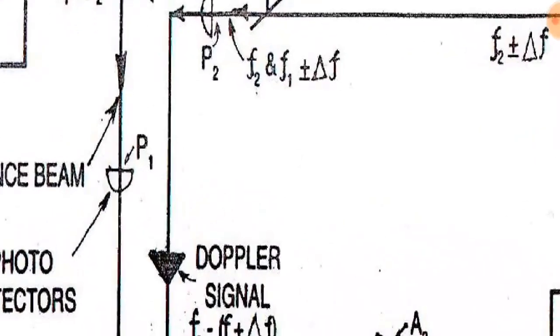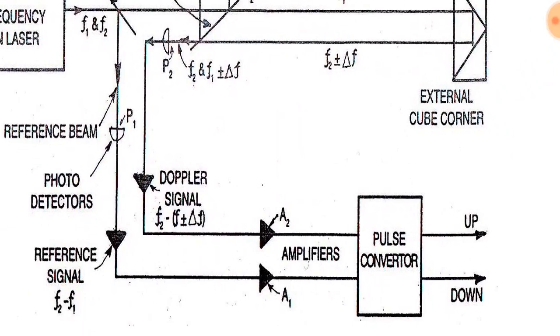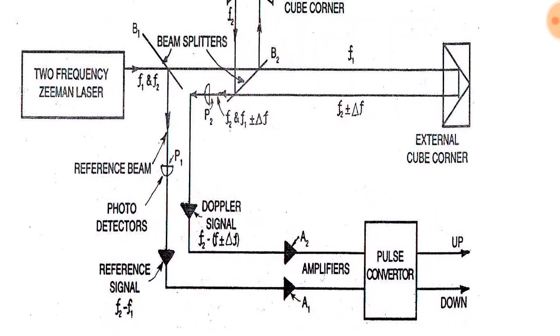Both signals from P1 and P2 go to the amplifiers to subtract the delta f signal, and then to the pulse converter. Then we get the analog or digital signal.